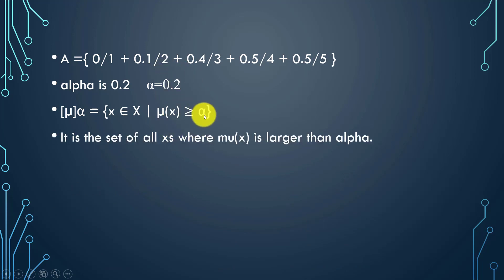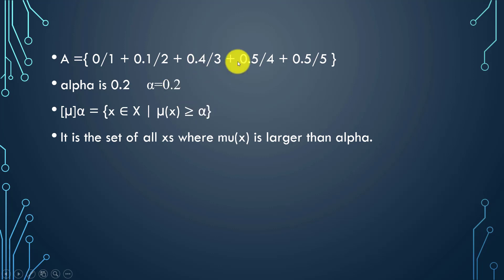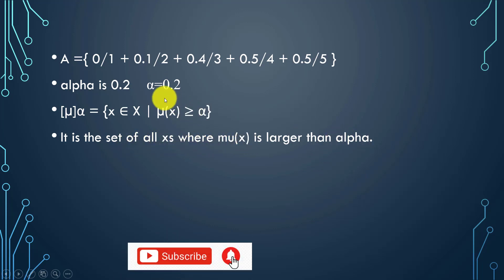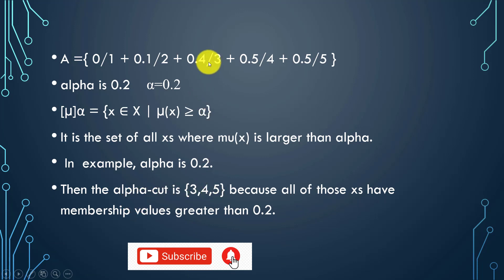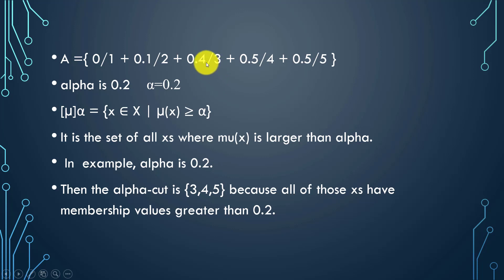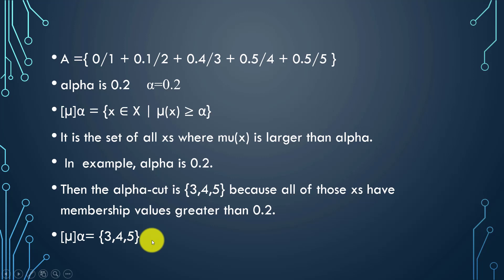Applying the condition: 0.1 is less than 0.2, and 0 is also less than 0.2 — so these are excluded. But 0.4 is greater than alpha (0.2), 0.5 is also greater than 0.2, and the second 0.5 is also greater than 0.2. So all x values whose membership is greater than or equal to 0.2 are the 3rd, 4th, and 5th elements — that is, membership values 0.4, 0.5, and 0.5. Therefore, the alpha cut is {3, 4, 5} (by position), and the answer is mu_alpha(A) = {0.4, 0.5, 0.5}. This is also called the alpha level cut.